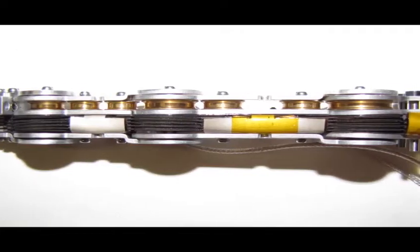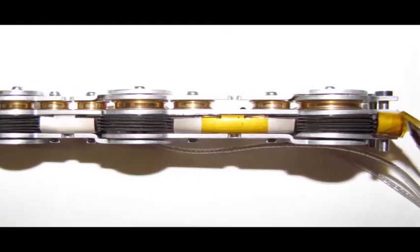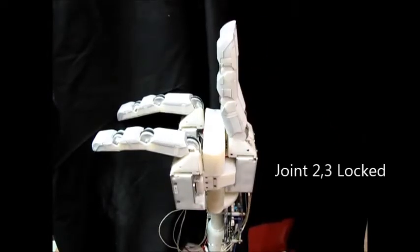Electrostatic breaks, located in the joints of each finger, are capable of independently locking, allowing the fingers to acquire a variety of locked shapes.